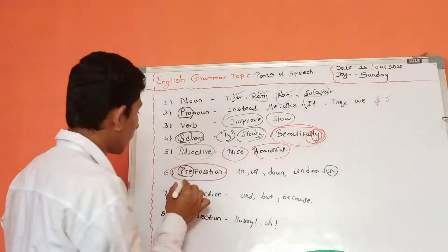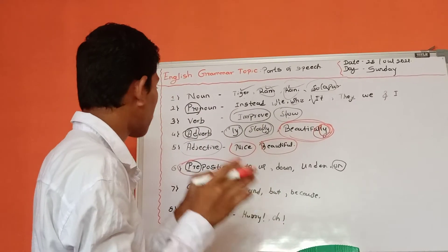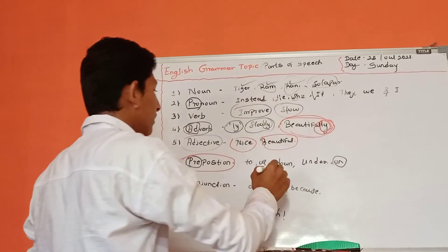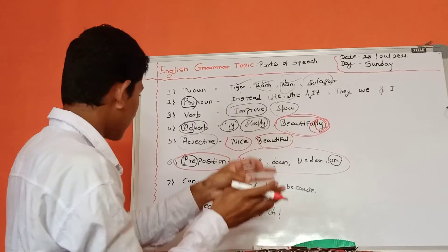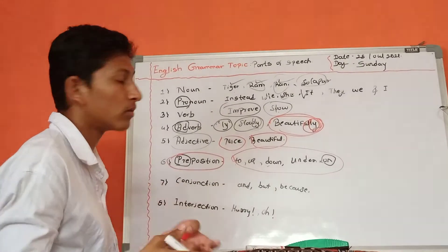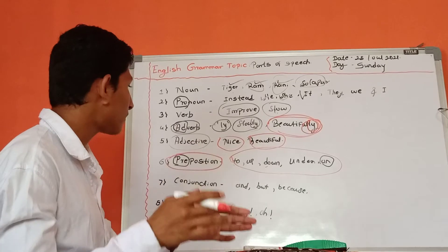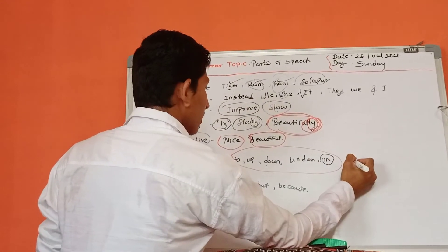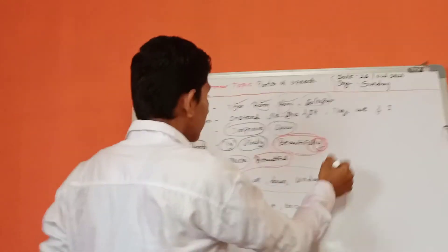Preposition means it will show the position of the object. Examples: 'on,' 'under,' 'up,' 'to' — these all are examples of preposition. 'Pre' means it comes before the objects and shows the position before the objects, subjects, nouns, or pronouns. It shows direction, time, or position. For example: 'The dog is on the table' — here 'on' is working as a preposition.